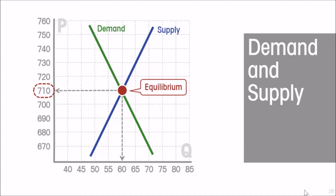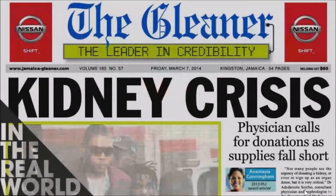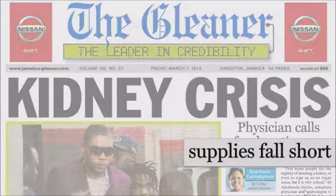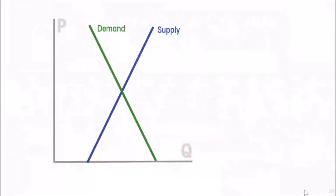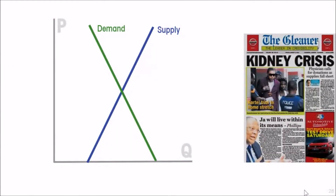Let us apply this simple model to throw some light on actual situations. Consider the headline: 'Kidney crisis — physician calls for donations as supplies fall short.' There is a waiting list of persons with kidney failure for donated organs. We can model this situation. One hesitates to call it a market, but a market it is. In most countries it is quite rightly illegal to buy or sell human organs.